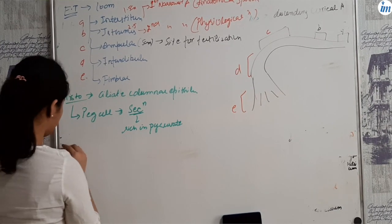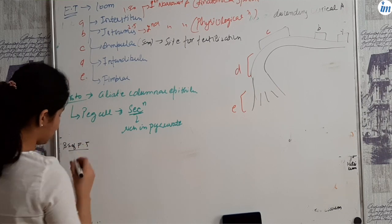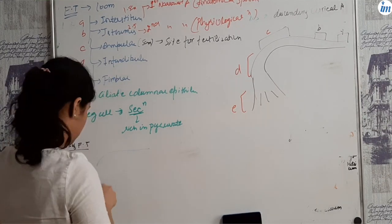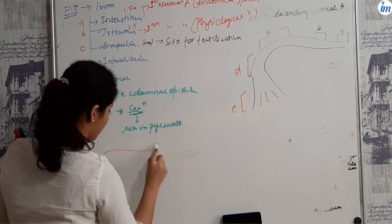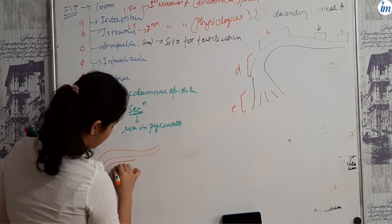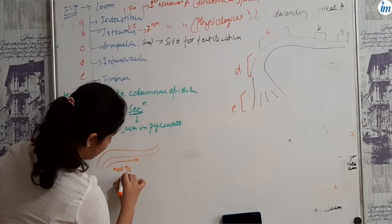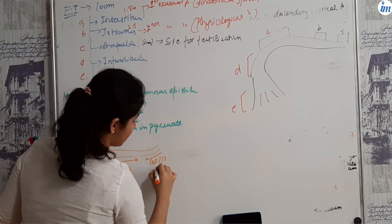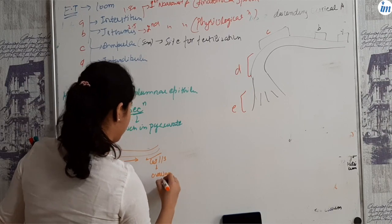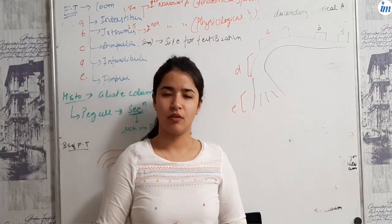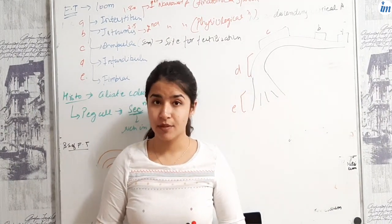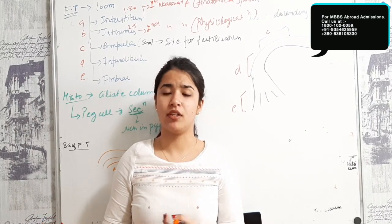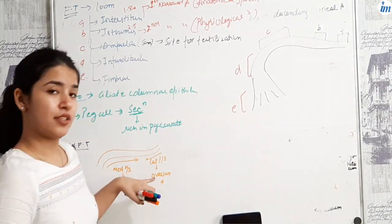The blood supply of fallopian tube: medial two-thirds is supplied by the uterine artery and the lateral one-third is supplied by the ovarian artery. Having dual blood supply, is it good or bad? It is a bad thing. Why? When the risk of getting infection increases, infections like PID or TB directly go to the fallopian tube because it has dual blood supply.